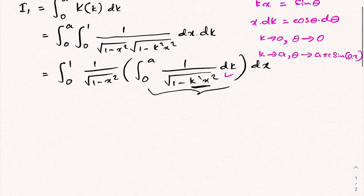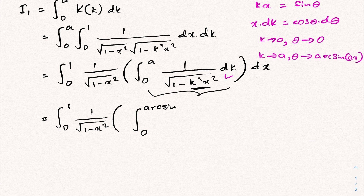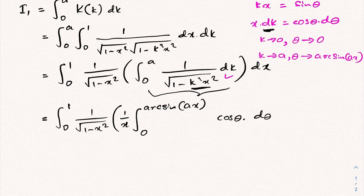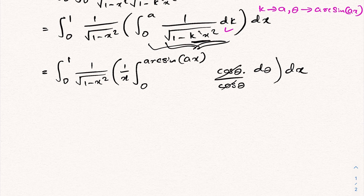Plugging in: integral from 0 to 1 of 1 over square root of (1 minus x squared), then the inner integral from 0 to arcsin(ax) of cosine θ dθ over x, since x is constant and can be taken outside. In the denominator, square root of (1 minus k squared x squared) becomes square root of (1 minus sin squared θ), which is cosine θ. So the cosine θ terms cancel.